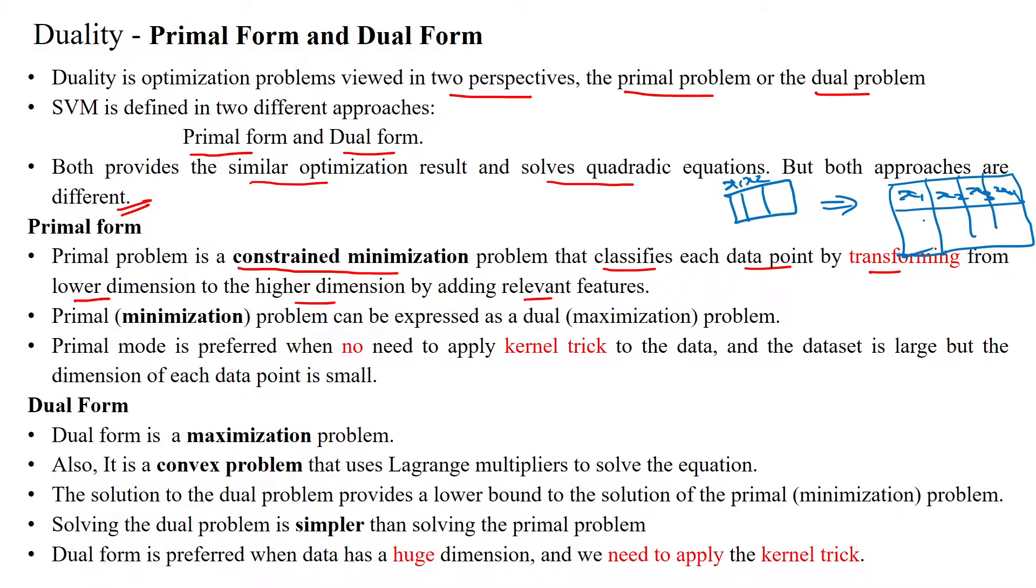The dataset's dimension is increasing. This problem can be expressed as a maximization problem also. Since we have more features, kernel trick is not needed when the dataset is large and the dimension of each data point is very small.